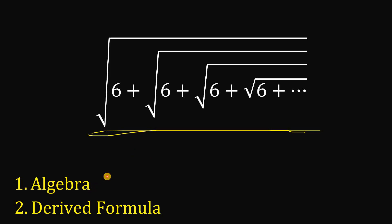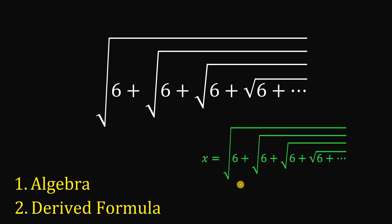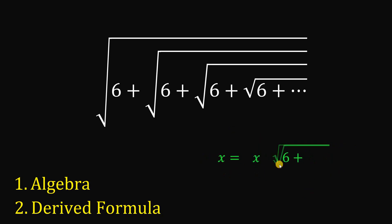Let's first use the algebra approach. Let x be equal to this entire expression. Notice that the inside part — square root of 6 plus square root of 6 until infinity — is also x. Therefore, we can replace it with x, giving us: x equals the square root of 6 plus x.